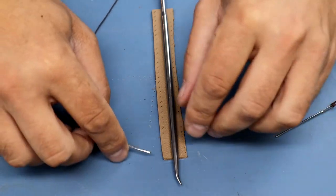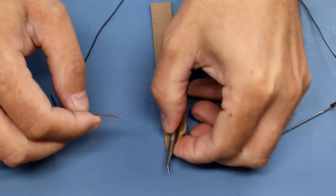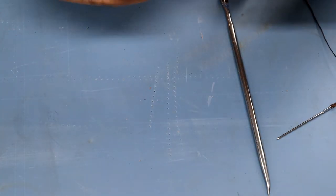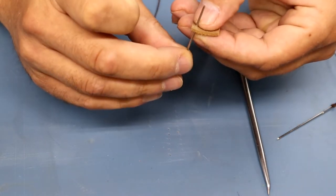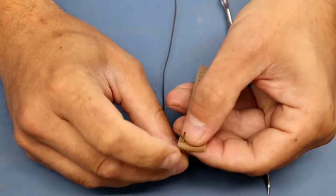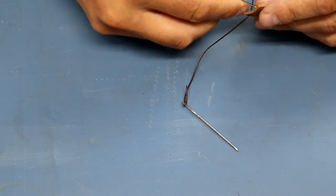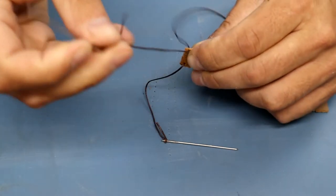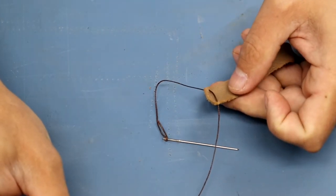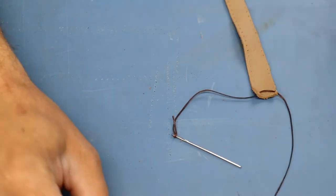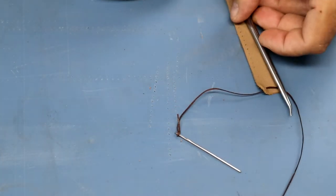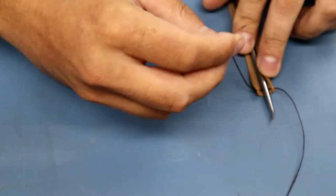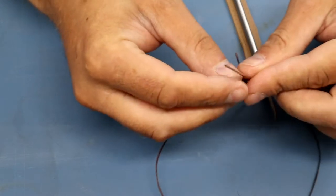So, to start a baseball stitch, we're basically going to go through our first holes. And I'm going to place my tool in roughly where I want it. But I'll be able to adjust it for the first bit. And then, center my threads.